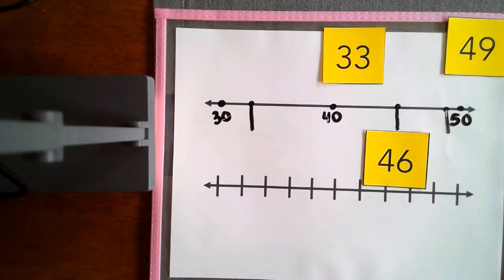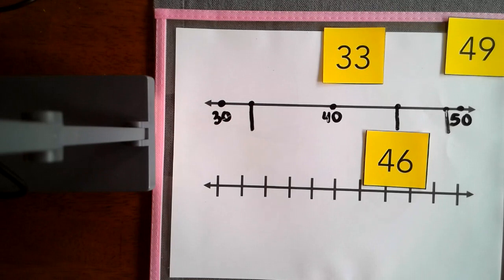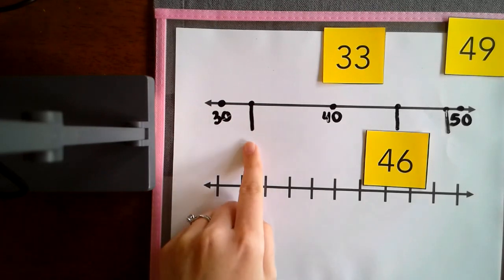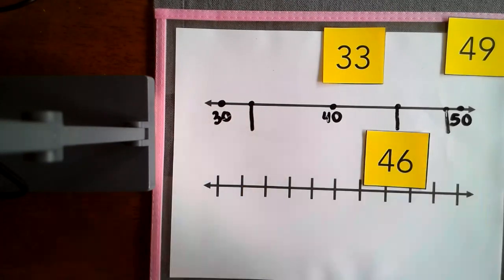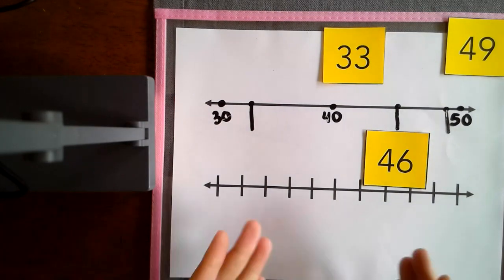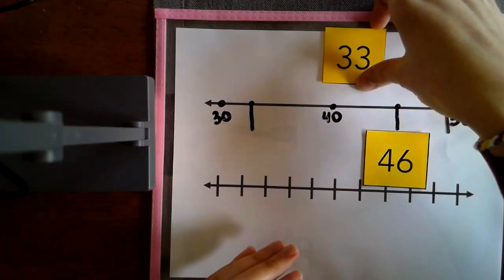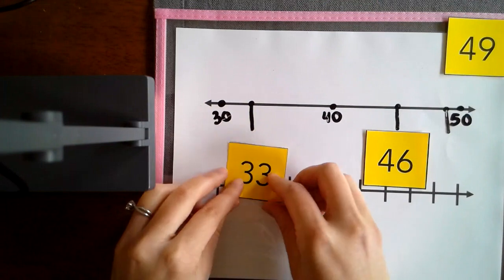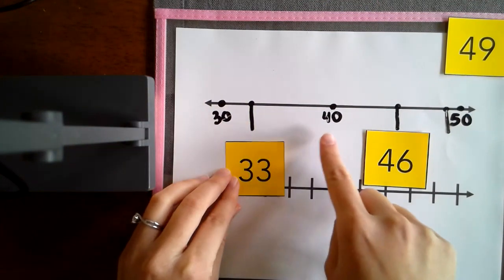Then I have 33. Well, should 33 go closer to 30 or closer to 50? It should go closer to 30, because 33 falls between 30 and 40.